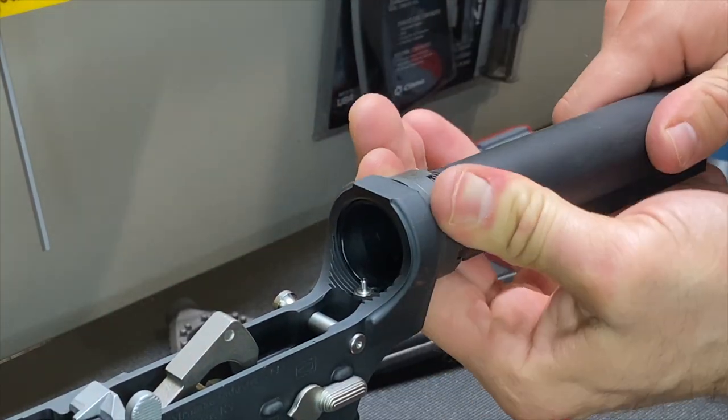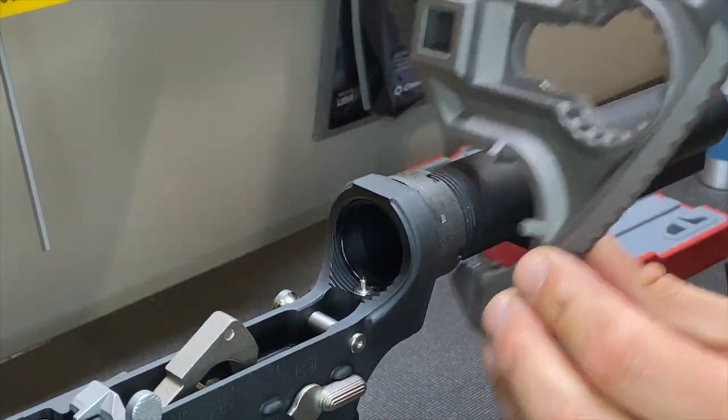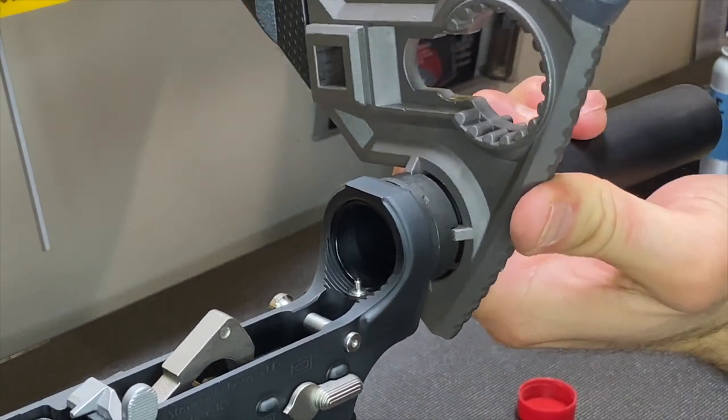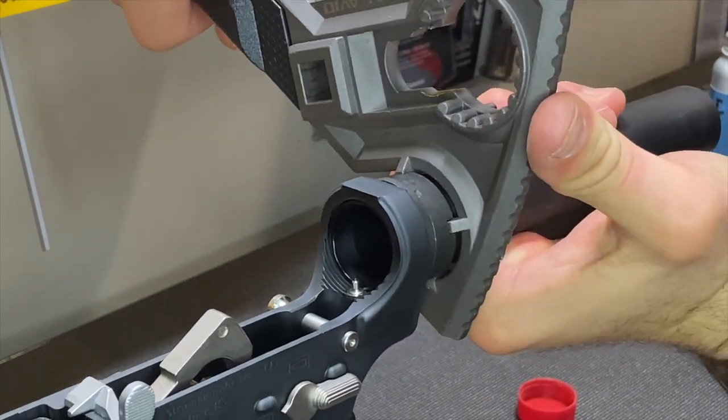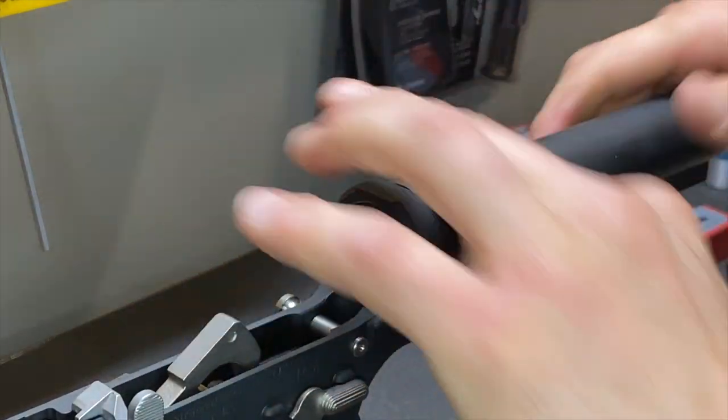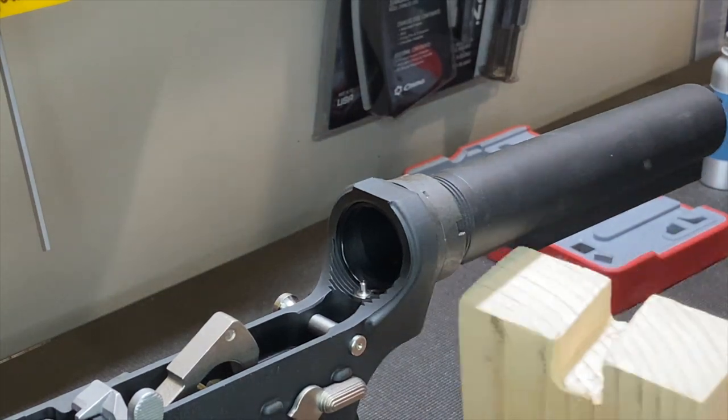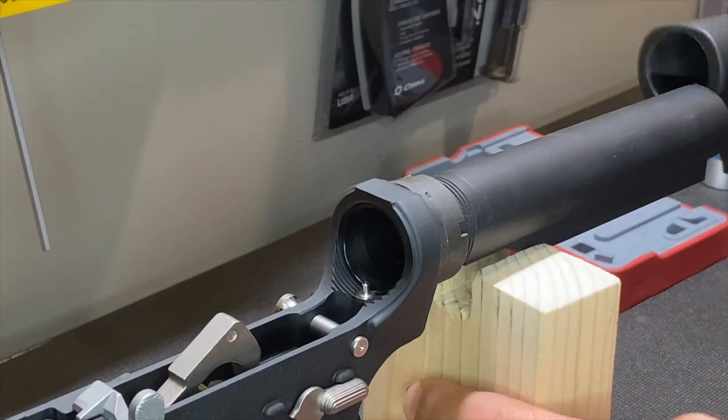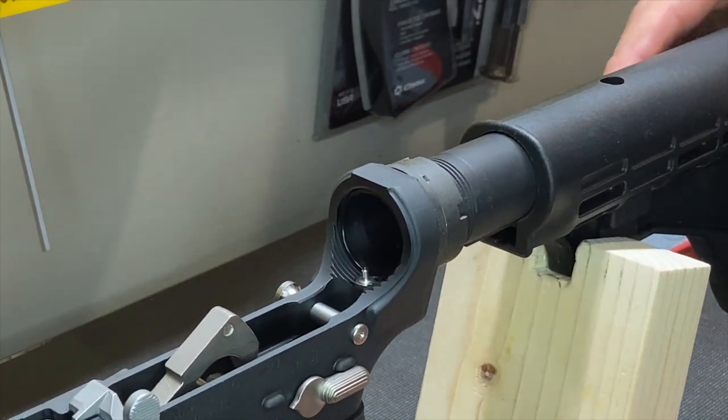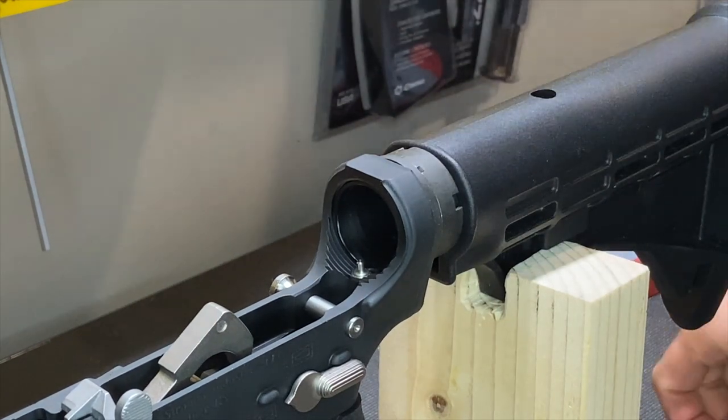Now that this is hand tight, everything's lined up, everything's working well. We need to tighten this down to 35 pounds per square inch, which is about that tight. Okay. Now that we're on nice and tight, this is just a little trick of the trade that I made, tighten that there.